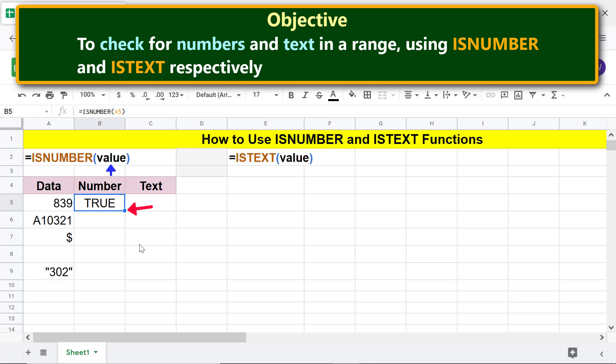Drag the handle to these cells to fill them with the formula. There you go! ISNUMBER has returned the logical value of TRUE for numbers and FALSE for non-numbers. Now let's type the ISTEXT function formula.